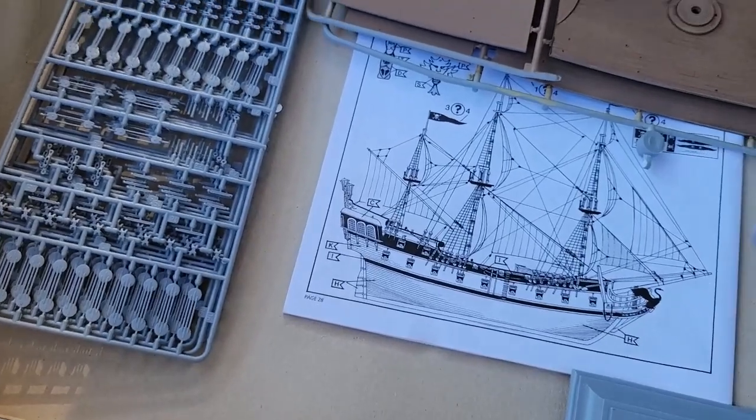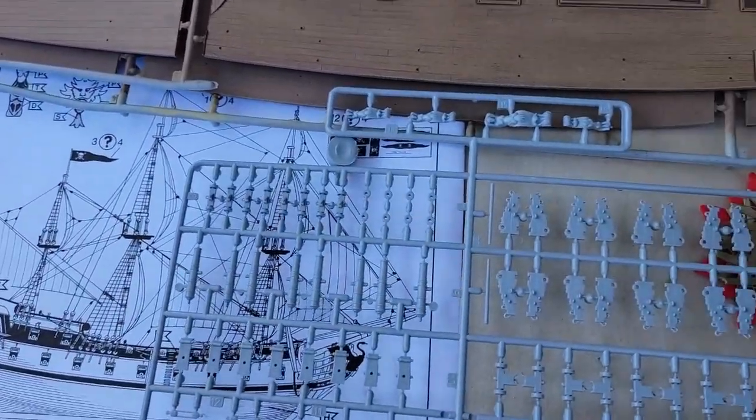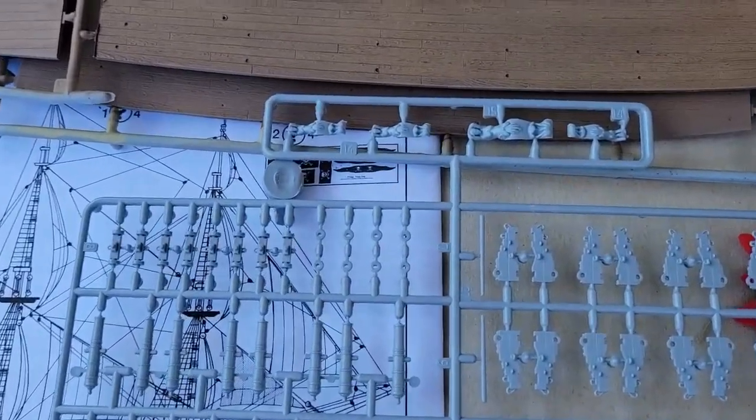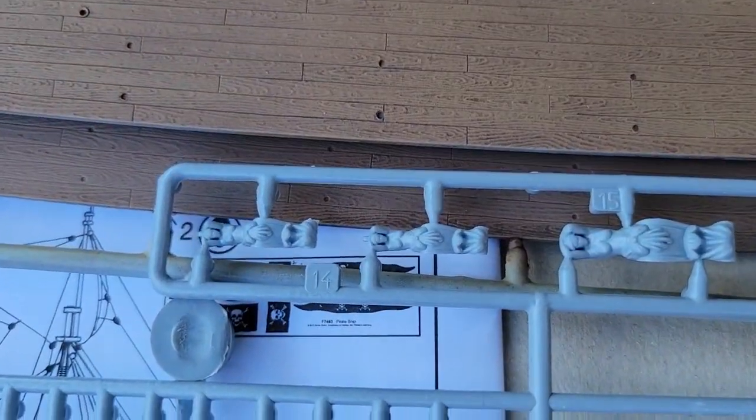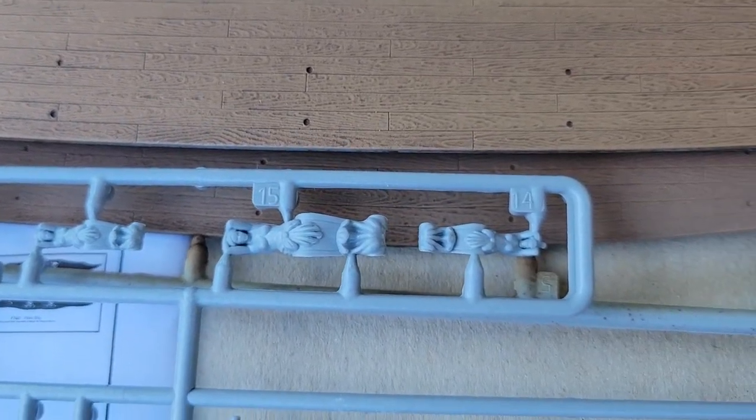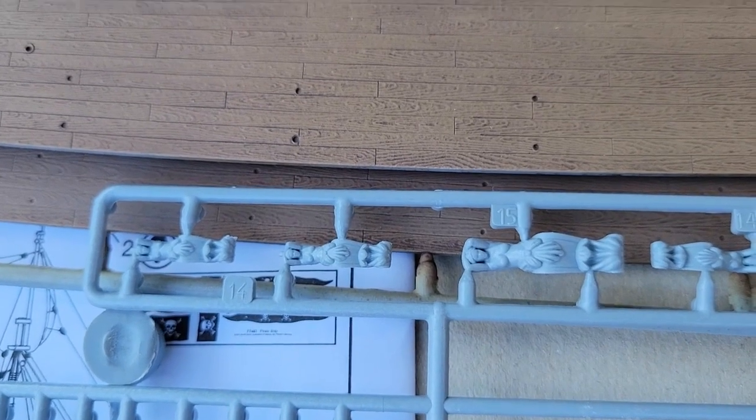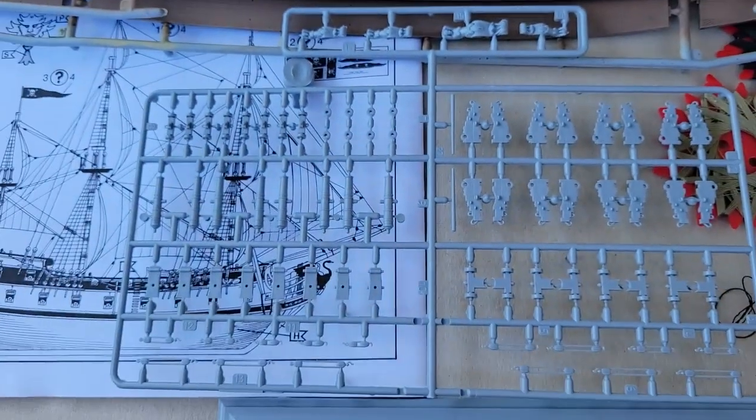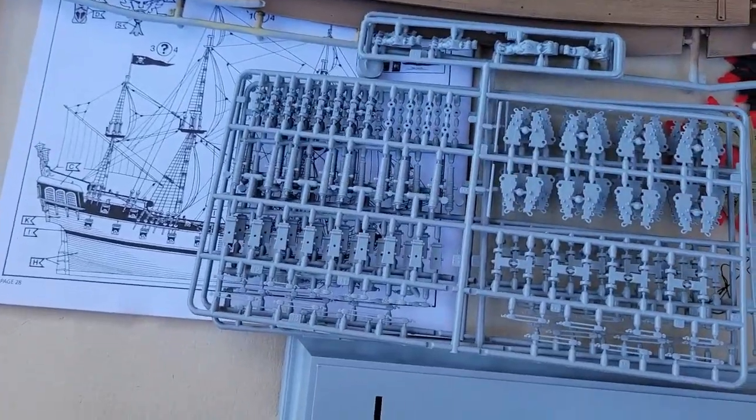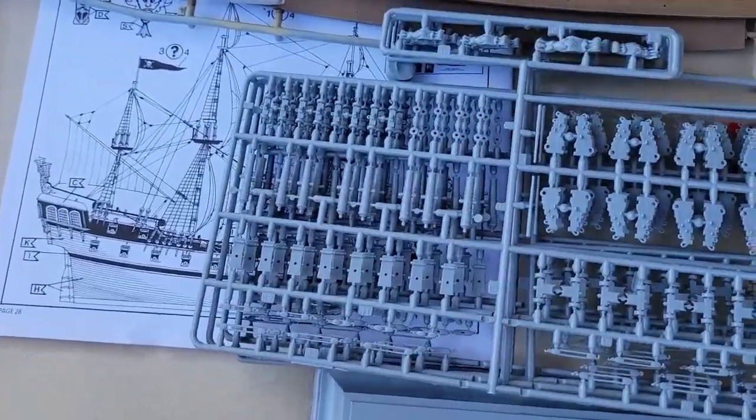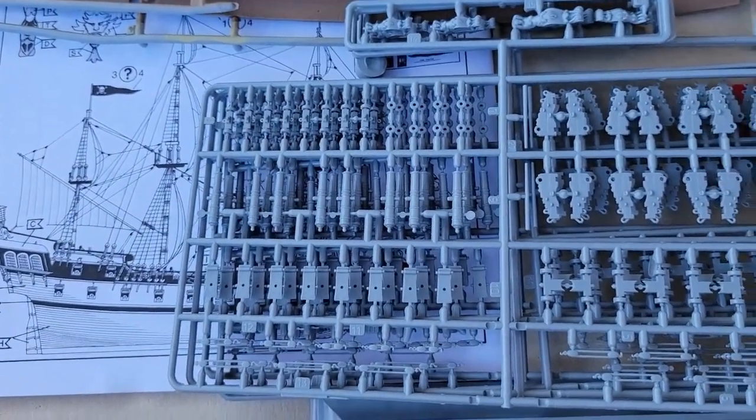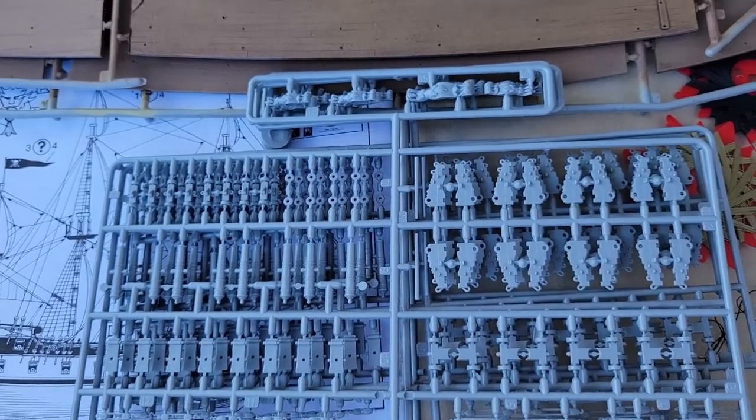And then these have, looks like the cannon, what do you call them, carriages. But look at this, the detail on these. And this is what goes around the captain's cabin area. And I actually think I'm going to resin cast me some of these for future use. Those are awesome. And there's four of these frets.